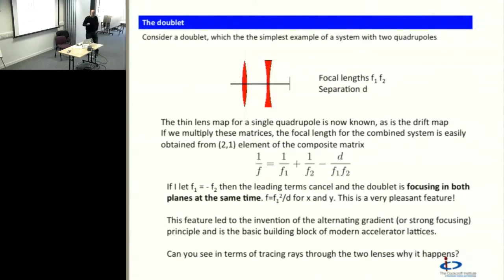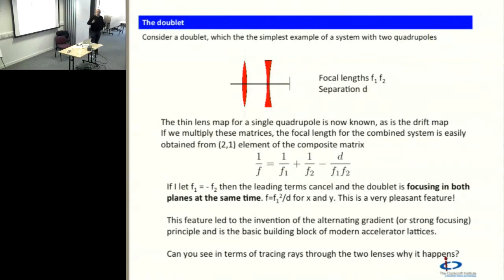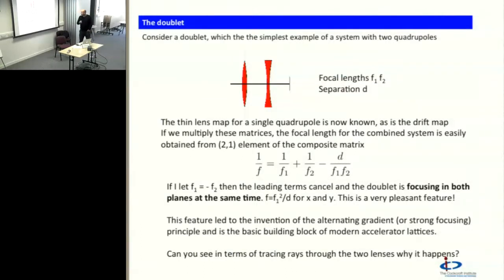That's general — f1 and f2 can be anything. But if I now pick f1 to be equal to minus f2, then the leading terms cancel and go away. All I'm left with is a term which is going to be the same sign for both planes and give me focusing in both planes. So the doublet then focuses in both planes with a focal length of f1-squared over d. I could easily construct a system that focuses in both planes simply by combining horizontally and vertically focusing quadrupoles. That's a really cool feature — it's not very obvious when you first look at the quadrupole matrix.